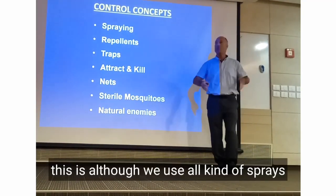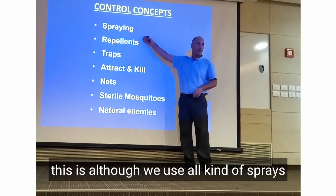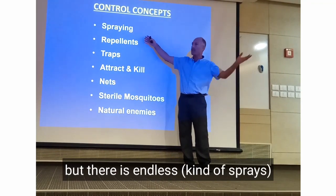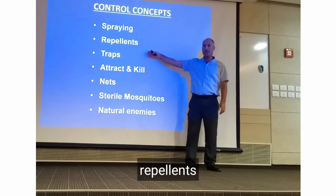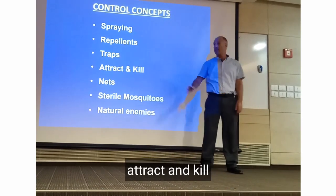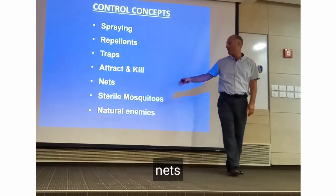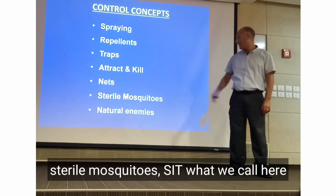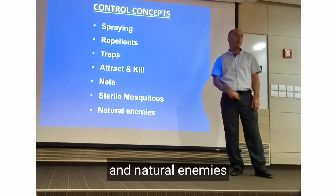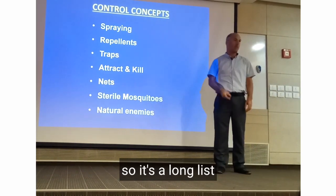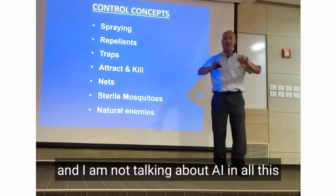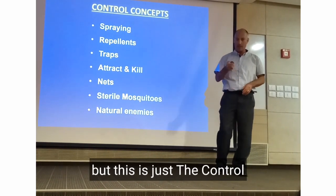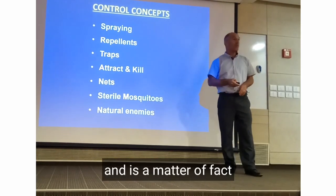Although we use all kinds of sprays — and we just heard about a few — there are endless repellents, traps, attract-and-kill, nets, sterile mosquitoes (what we call SAT here), and natural enemies. It's a long list, and I'm not even talking about AI and all that — this is just the control side.